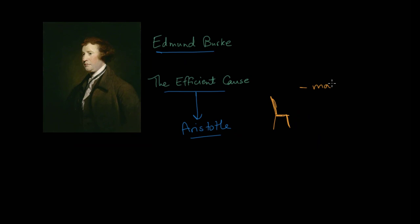The first is the material. Every chair needs to be made from different materials like wood or leather or metal, whatever you want to use. We also have the formal cause, which very roughly is the shape of the chair, the kind of object it is.